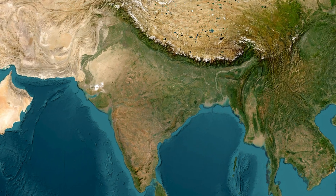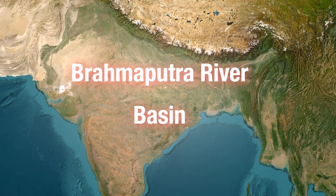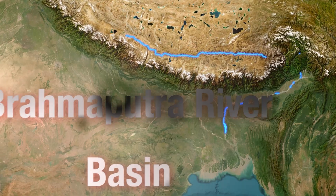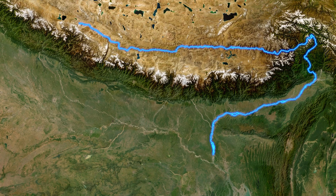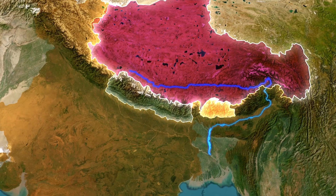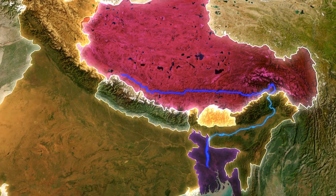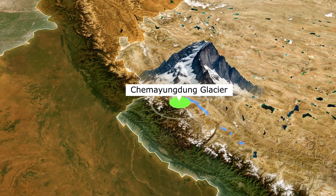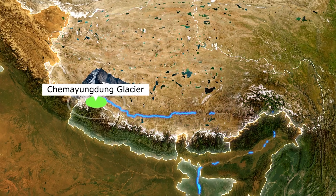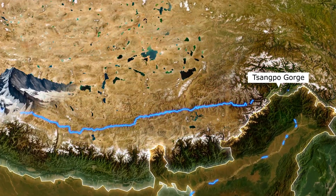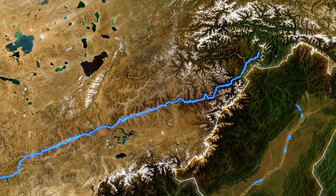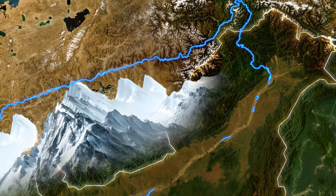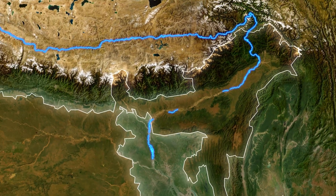In today's video, let us understand the Brahmaputra river basin. The Brahmaputra river is one of Asia's most majestic and dynamic rivers, with a basin that spans Tibet, Bhutan, India, and Bangladesh. Its journey begins in the Chamayungdung glacier of the Kailash range near Manasarovar Lake in Tibet, where this river is also called Tsangpo, meaning 'the purifier.' After carving a dramatic gorge near Namcha Barwa in the central Himalayas, the river turns south.